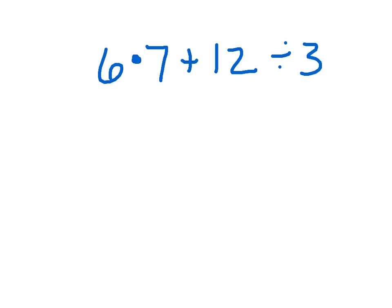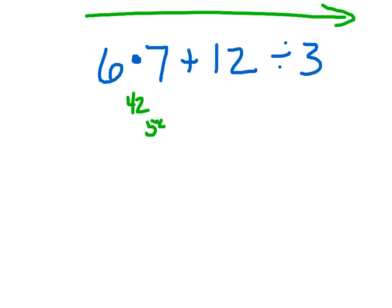Let's take this expression right here: 6 times 7 plus 12 divided by 3. What if we solved this going from left to right? We would have 6 times 7 equals 42. 42 plus 12 would get us 54. And 54 divided by 3 gets us 18.